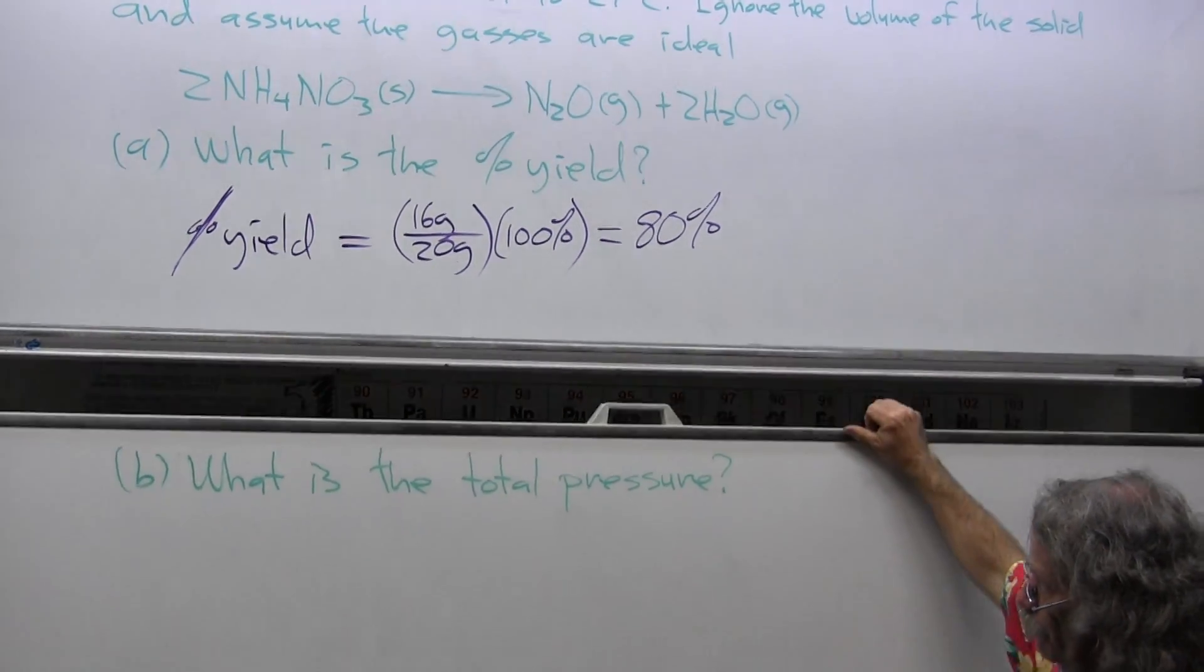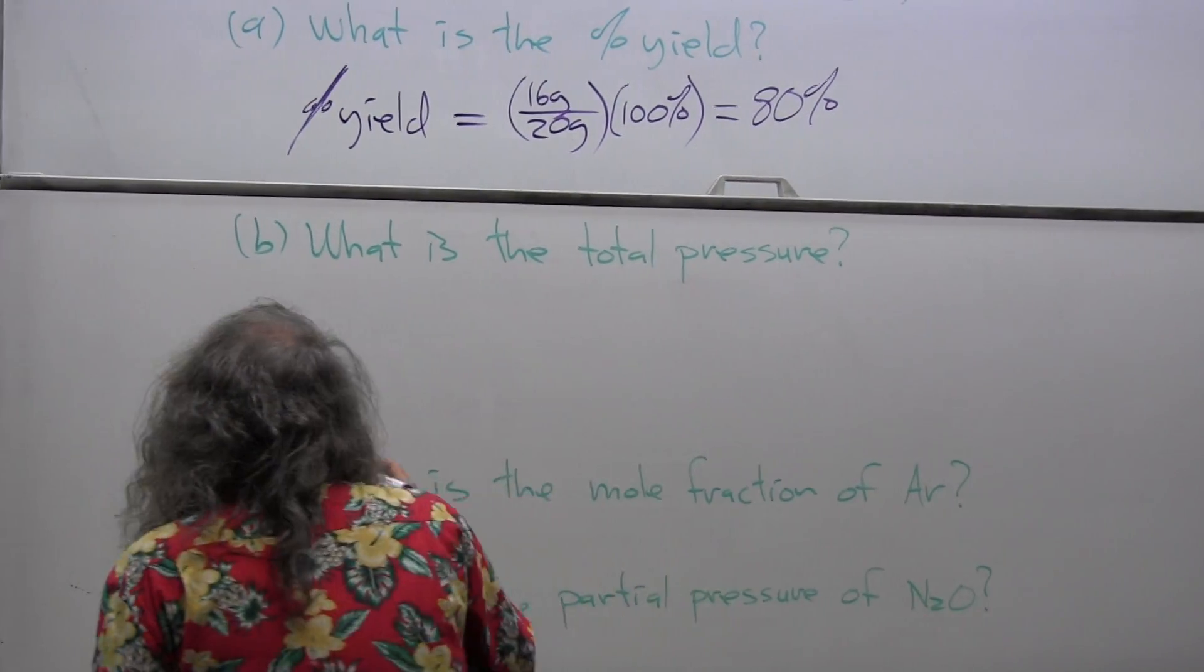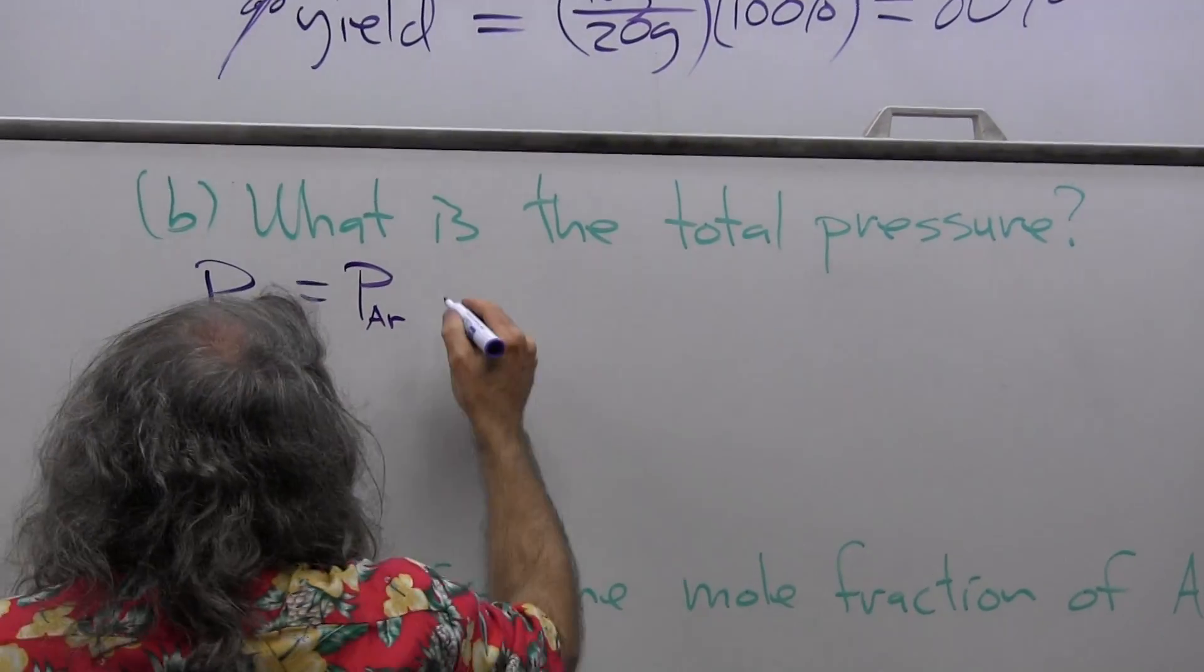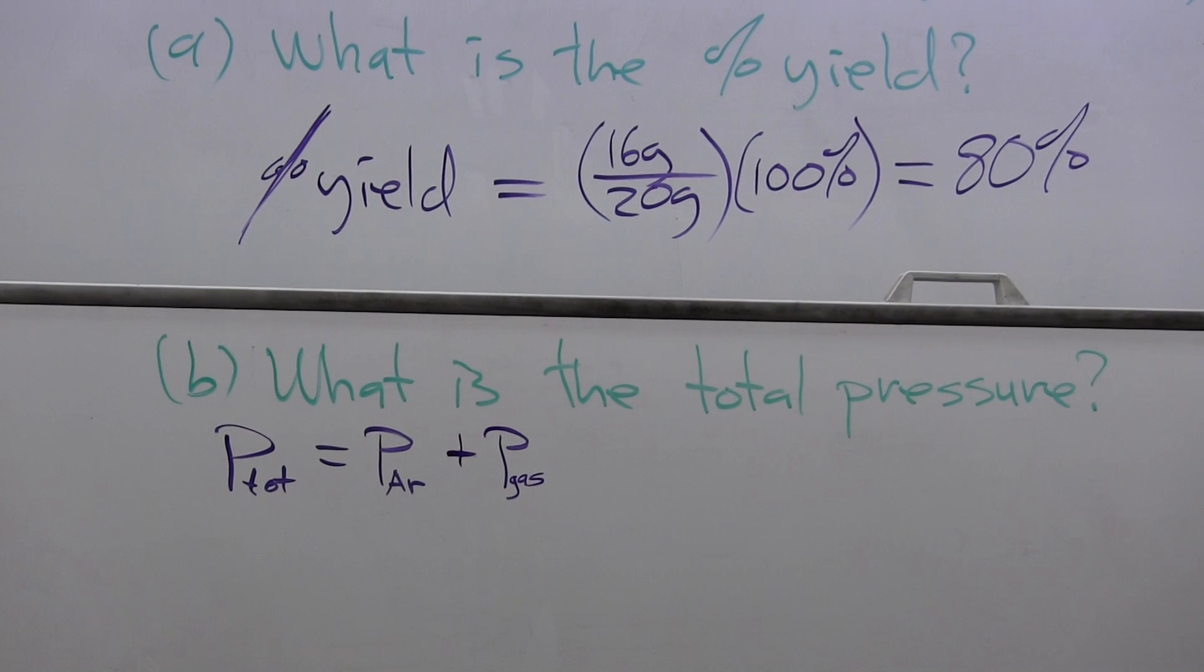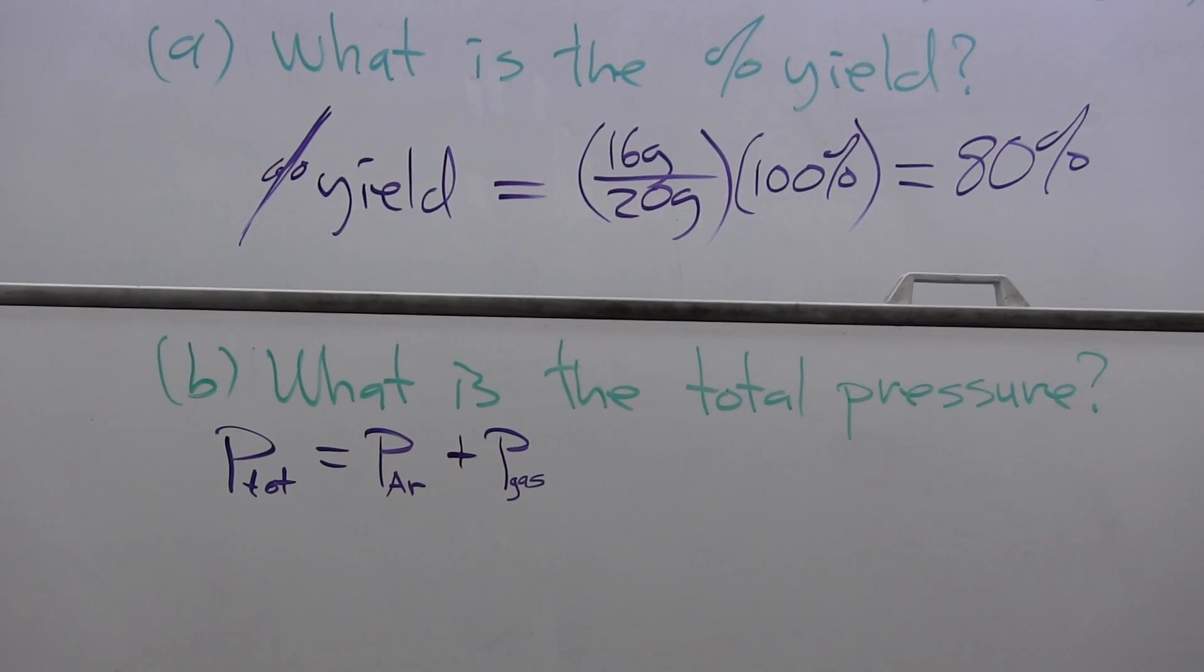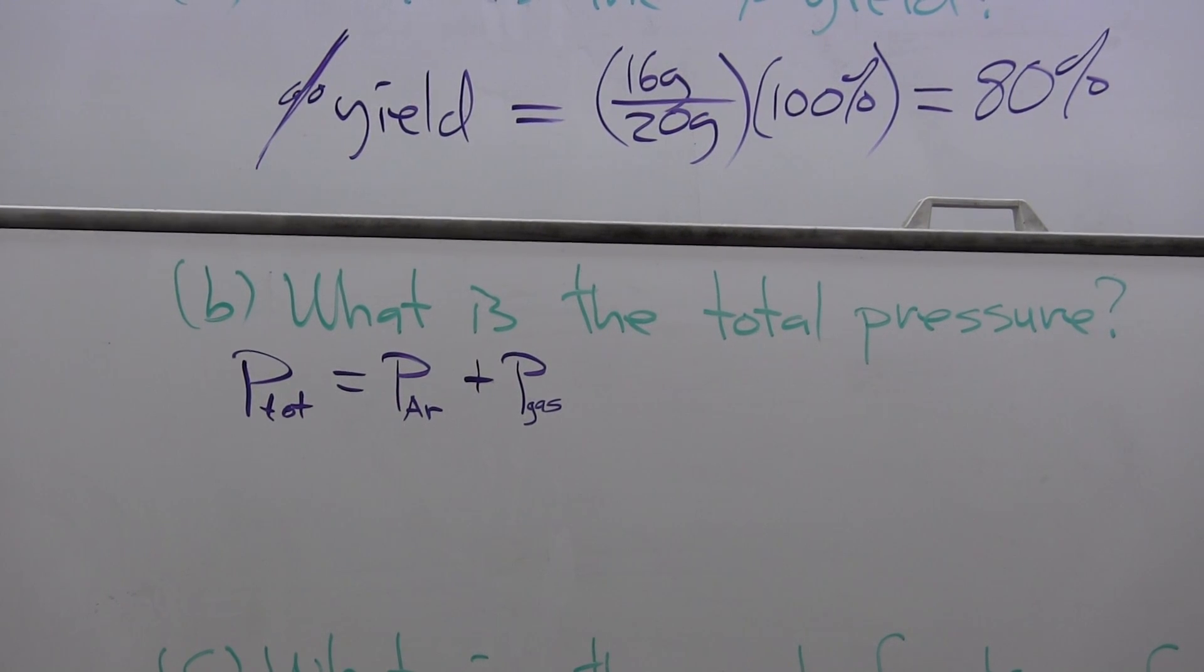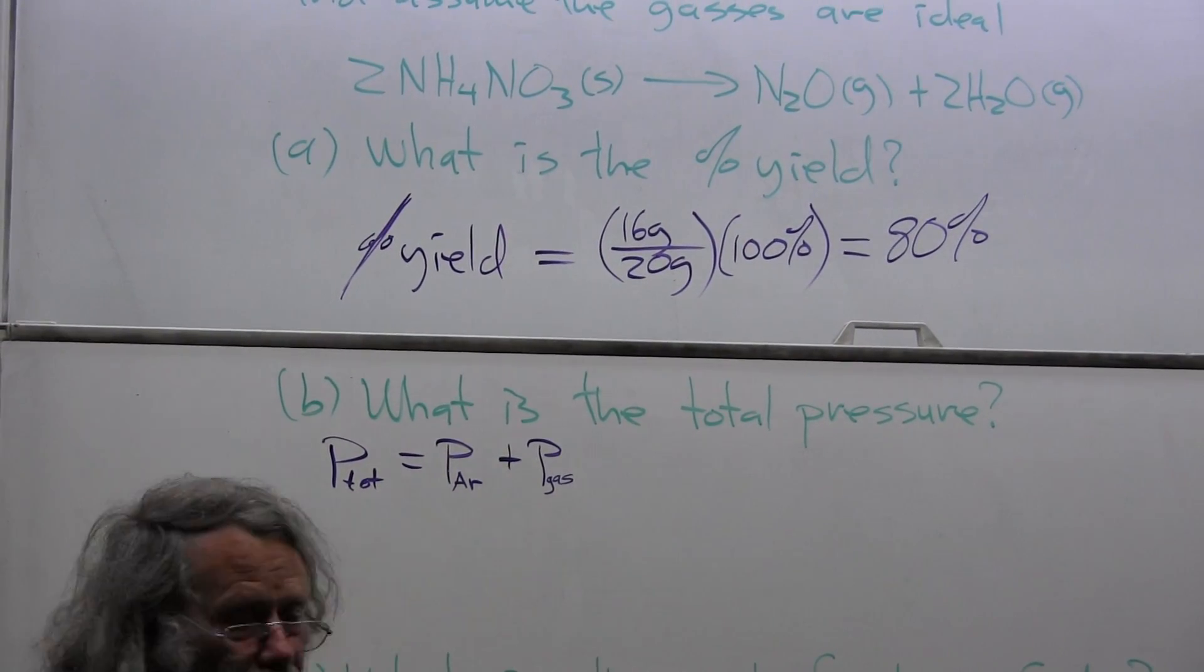Now, part B. What is the total pressure? Well, the total pressure is equal to the partial pressure of the argon plus the pressure of the gas. And gas would be all the gaseous products. And we already know what the pressure of argon is. Partial pressure of argon was one atmosphere at 27 degrees Celsius in that 10 liter vessel. No argon got in or out. It's still there. It doesn't involve itself in any reaction. So the pressure of argon is one atmosphere. We just have to determine the pressure of the gas.